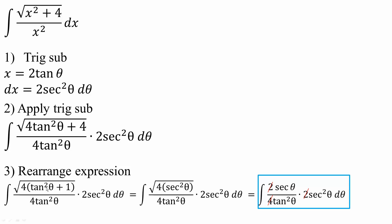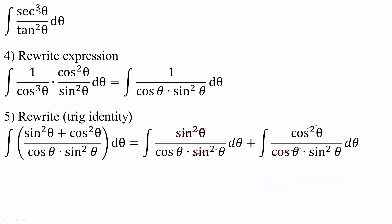I know that tan squared theta plus 1 is equal to secant squared theta, so I will replace it with secant squared theta. So now we have the square root of 4 times secant squared theta, which equals 2 secant theta, divided by 4 tan squared theta times 2 secant squared theta d theta. Multiplying 2 times 2 gives 4, and 4 divided by 4 is 1, so I get secant cubed theta divided by tan squared theta d theta.